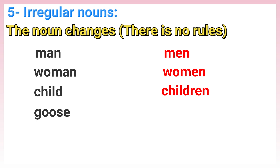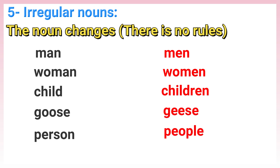More irregular nouns: goose → geese, person → people, foot → feet.